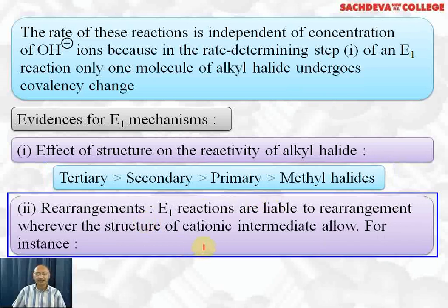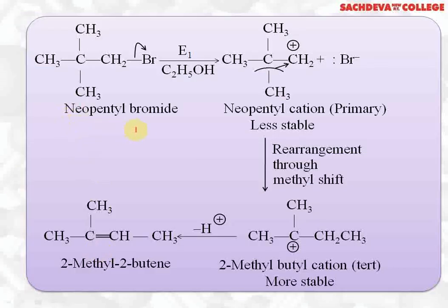E1 reactions are also liable to rearrangements — rearrangement may take place because primary may change to secondary, and secondary may change to tertiary carbocation, which are more stable. For example, with neopentyl bromide as the primary alkyl halide, BR⁻ is lost giving the neopentyl carbocation. Rearrangement then takes place by a methyl shift, so the methyl group shifts and the positive charge moves to the tertiary carbon, giving the 2-methyl-butyl (tertiary) carbocation.